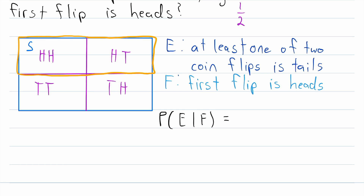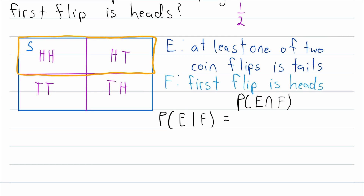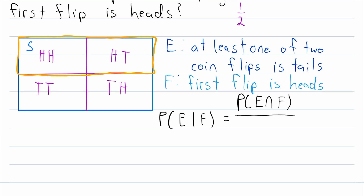So what is P(E|F) equal to? Since F is given, E can only occur where F occurs. The numerator of the conditional probability is the probability of E intersect F. But instead of evaluating this relative to the whole sample space, we reduce the sample space to only where the given condition occurs — so we divide by the probability of F. This is the conditional probability formula: P(E|F) = P(E∩F) / P(F).